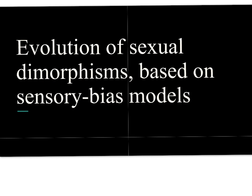Another explanation for sexual dimorphisms is the sensory bias model. This model assumes that the evolution of sexual dimorphisms is driven by pre-existing biases in the female nervous system. A male without good genes could develop a phenotype that correlates with a good gene that females already have a bias towards. For example, a bird with a red crest on its chest — even if the male lacks good genotype but has this phenotypic trait, he will have better reproductive success than other males. These pre-existing preferences are created by natural selection so that species have the best possible chance of surviving and reproducing.